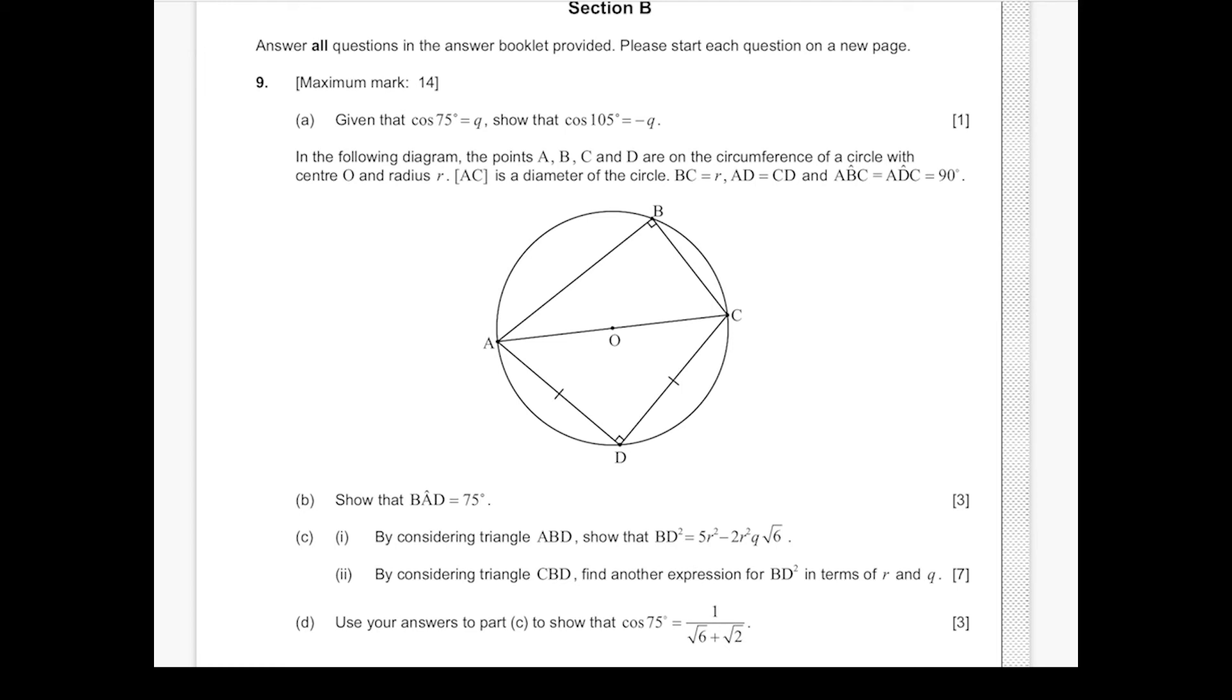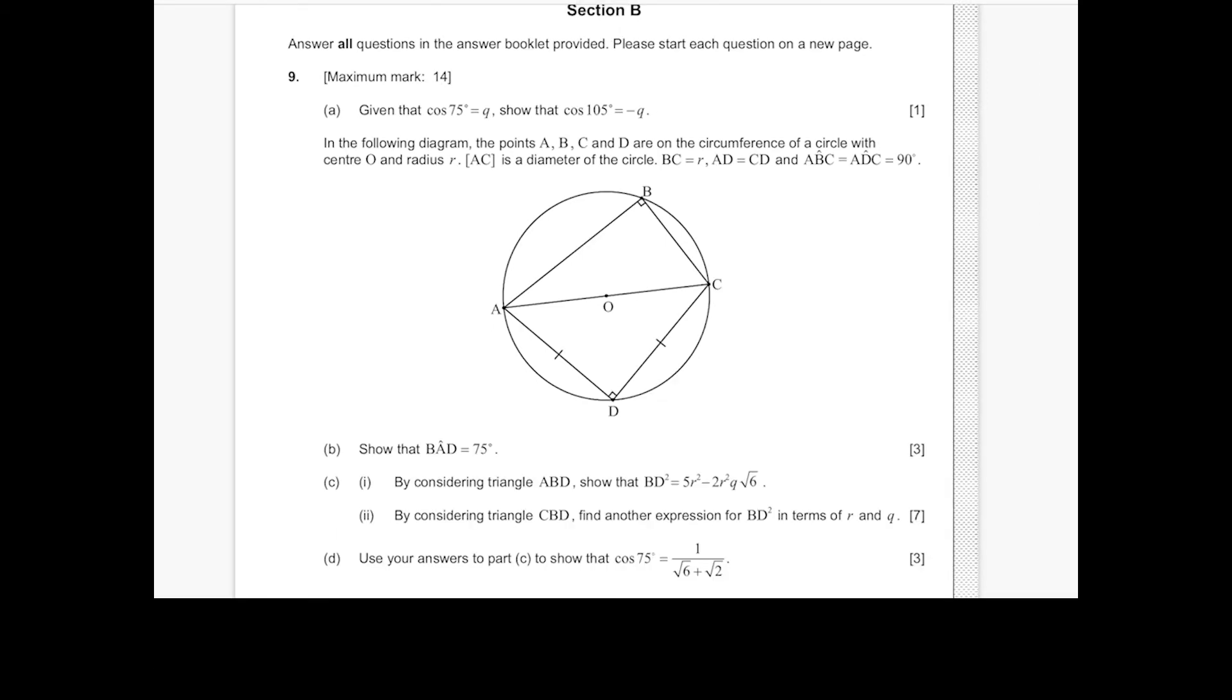For this question, we were given a diagram related to circles and triangles, and there are various subsections, so let's just dive straight in to part A. We don't need to look at the diagram for part A. We're just showing cosine 75 degrees equals Q, then show that cosine 105 is minus Q.